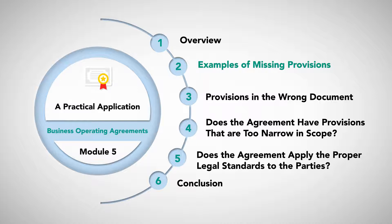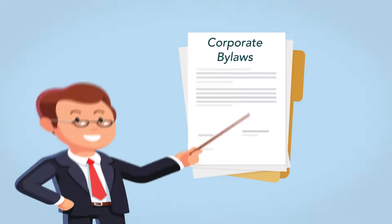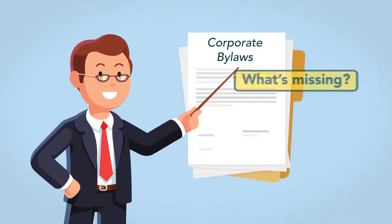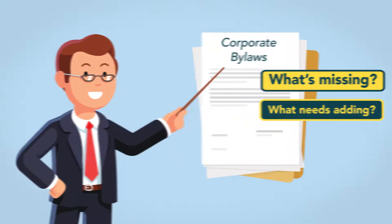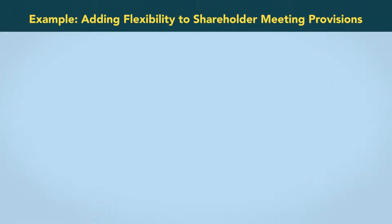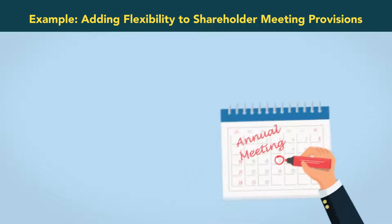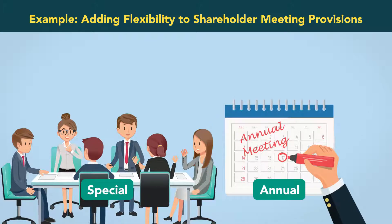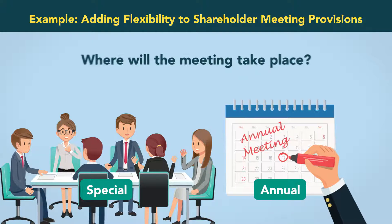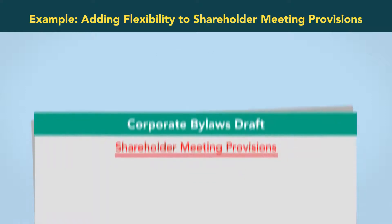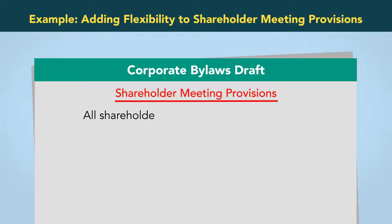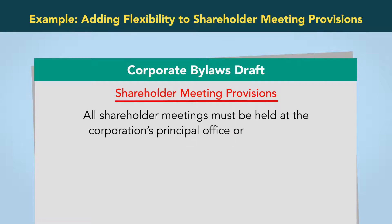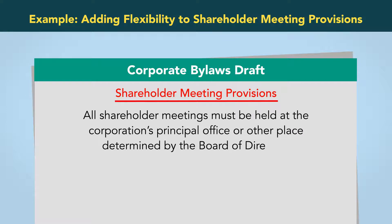Examples of missing provisions. With these considerations in mind, let's examine some shareholder provisions with an eye towards what may be missing and need to be added. Adding flexibility to shareholder meeting provisions: bylaws commonly refer to two kinds of shareholder meetings, annual and special. One question that applies to both types is where the meeting will take place. Our template offers the following minimal guidance: all shareholder meetings must be held at the corporation's principal office or other place determined by the board of directors.